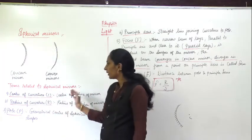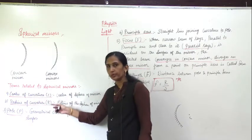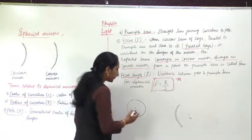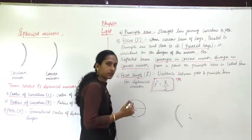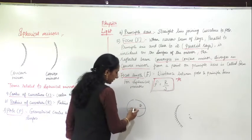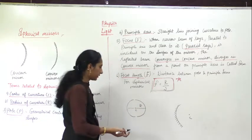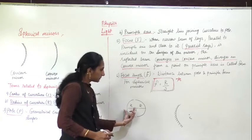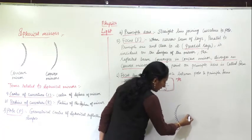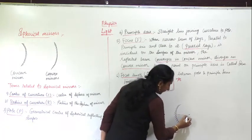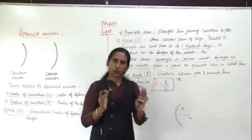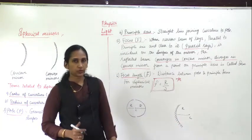The second term is radius of curvature, denoted by the letter R. Just as you have studied radius in a circle, similarly here there are two radii and both combined form the diameter. The radius of curvature is the distance from the center of curvature C to the mirror surface — it is the radius of the sphere of the mirror. This is your radius of curvature R.